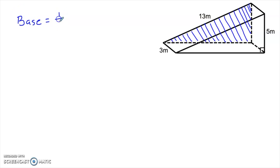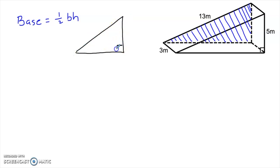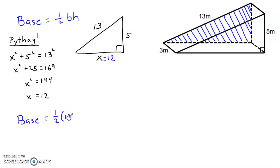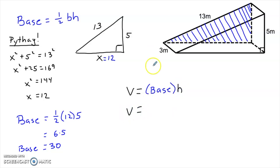Since our Big B Base is a triangle, its area is one-half base times height. Notice this base is a lowercase b — that's the reason I distinguish Big B Base from little b. The height of the triangle is 5 meters. But I don't actually know the base right now — I know the hypotenuse, but the base and height need to be perpendicular. Using the Pythagorean theorem: x² + 5² = 13², so x² = 144, and x = 12. The base of this triangle is 12. So Big B Base = one-half × 12 × 5 = 30. The volume is Big B Base times height = 30 × 3 = 90 cubic meters.